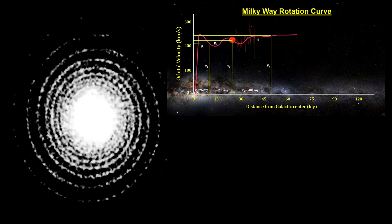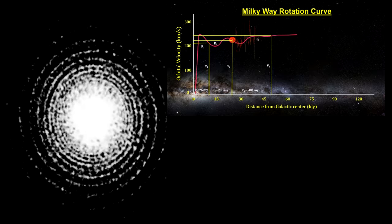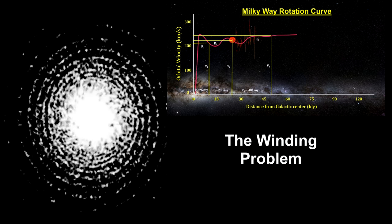But from all we see from spiral galaxies of all ages, the spiral arms structure does persist over billions of years. This disconnect is called the winding problem. Clearly, the spiral arms do not rotate with the stars, dust, and gas.